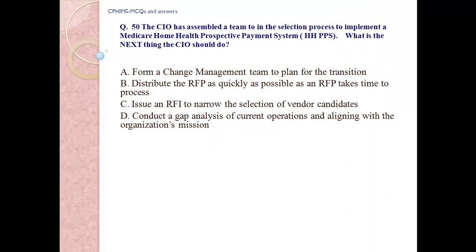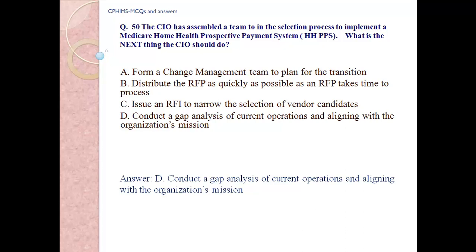Question number 50. The CIO (chief information officer) has assembled a team in the selection process to implement a Medicare home health prospective payment system (HHPPS). What is the next thing the CIO should do? a. form a change management team to plan for the transition; b. distribute an RFP as quickly as possible, as an RFP takes time to process; c. issue an RFI to narrow the selection of vendor candidates; d. conduct a gap analysis of current operations and align with the organization's mission. Answer: D — conduct a gap analysis of current operations and align with the organization's mission.